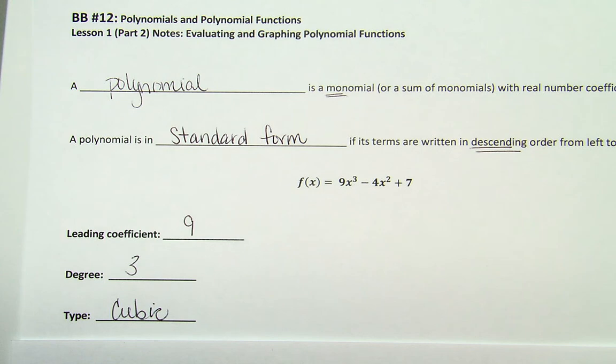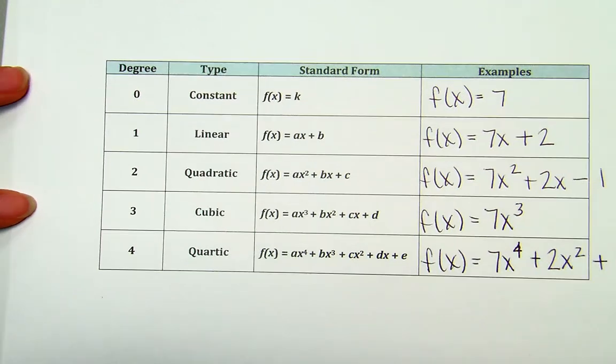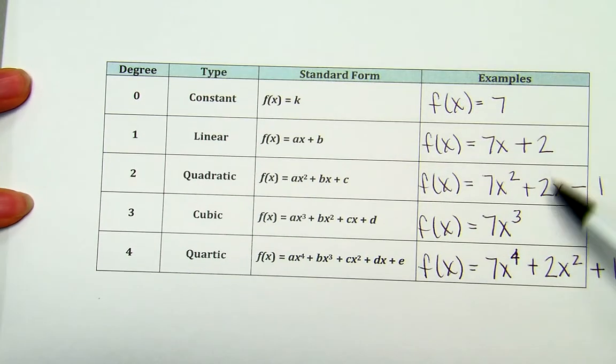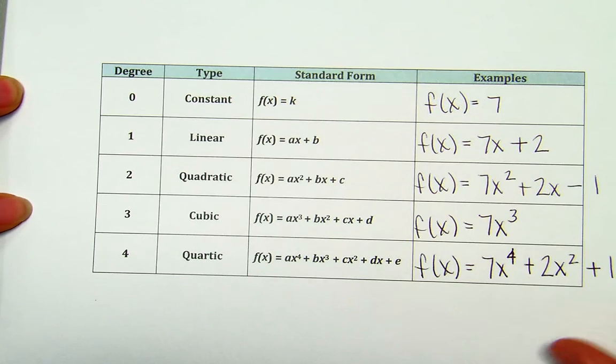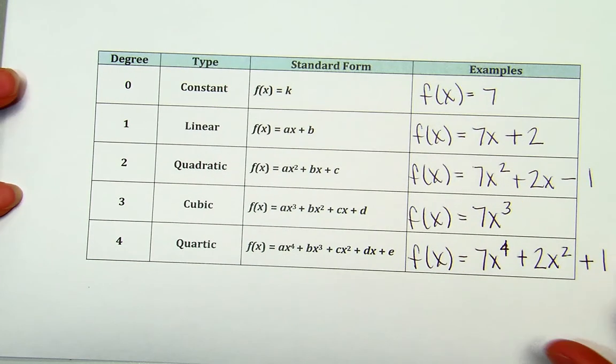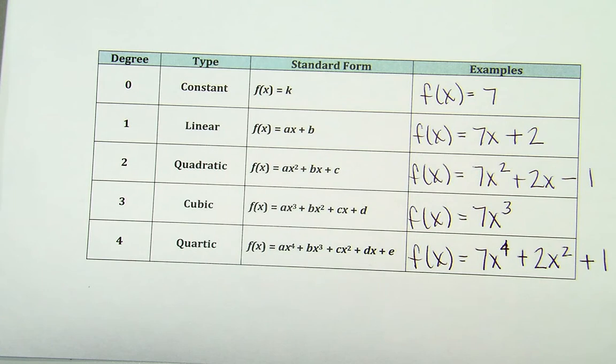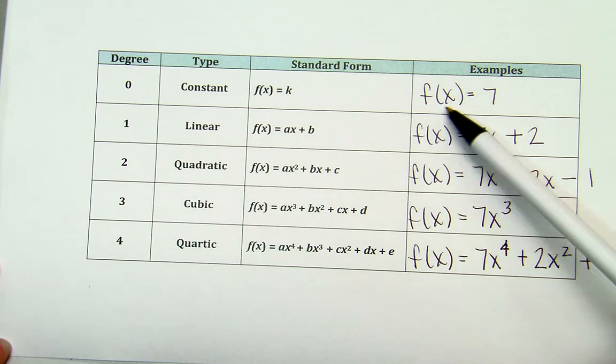We also talked about the different types of polynomials, starting with constants and degree 0 all the way through degree 4, which are called quartics. So at the very bottom, I gave you, and I actually filled in for you already, the different examples going along with the different degrees that we have for polynomials. So starting out, if we have degree 0, we know that that's a constant. So we know that there's going to be no variable involved. So one example of that would be f(x) = 7.